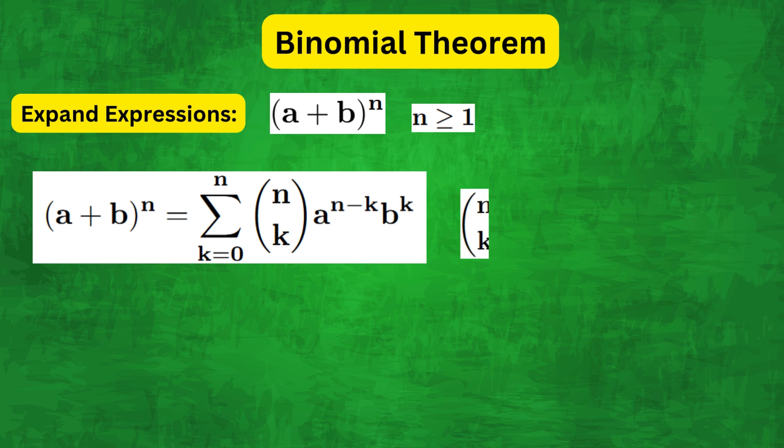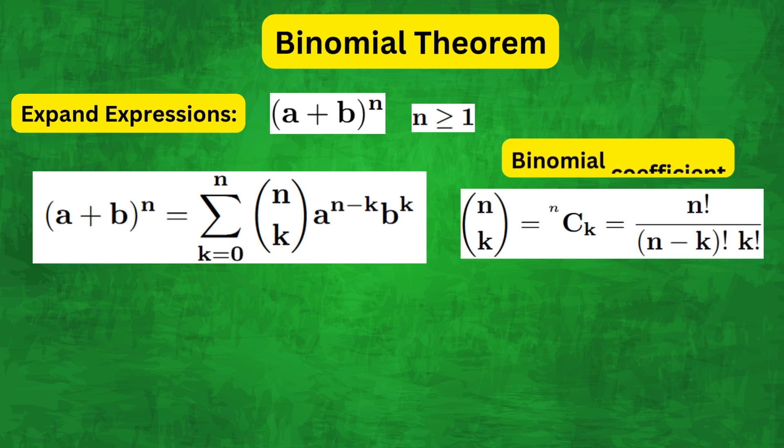Now n combination k is effectively called the binomial coefficient and is given by n factorial over n minus k factorial times k factorial.